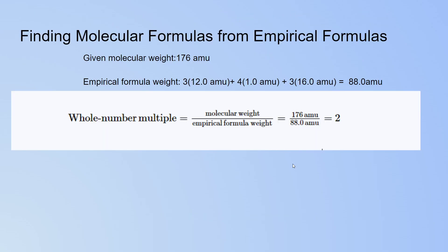How do you find the molecular formula using the empirical formula? You'll be given a molecular weight — how much the whole molecule is — which is 176 AMU. This could also be expressed as 176 grams per mole. The numerical value of molar mass and molecular weight are the same, but the units differ: AMU is on the atomic level, while grams per mole is on the molar scale. They are interchangeable as a numerical value.